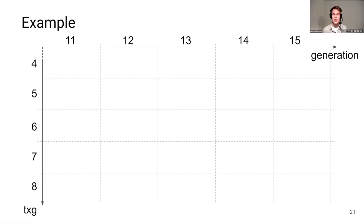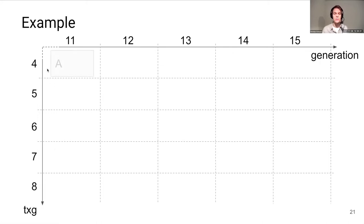Now let's make things more concrete with an example. Here is a visualization of the storage substrate's contents and the metadata of each log record. On the x-axis we have the generation number, used to encode logical dependencies between records. On the y-axis we have the transaction group of individual records. The name of each record — represented by a letter — is also metadata that identifies the entry uniquely within a generation.